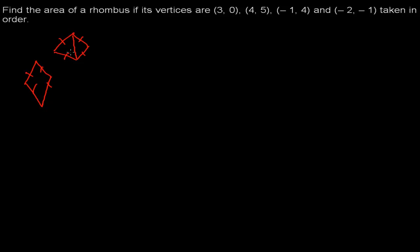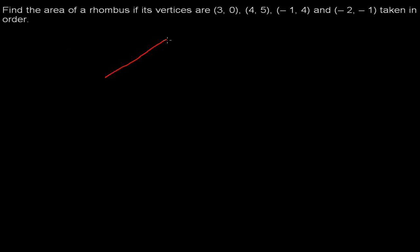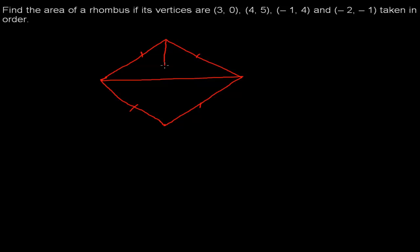One more feature of a rhombus is that when the diagonals intersect, they make 90 degrees to each other. So when the diagonals intersect, they make 90 degrees — and by vertically opposite angles, all four angles at the intersection are 90 degrees.